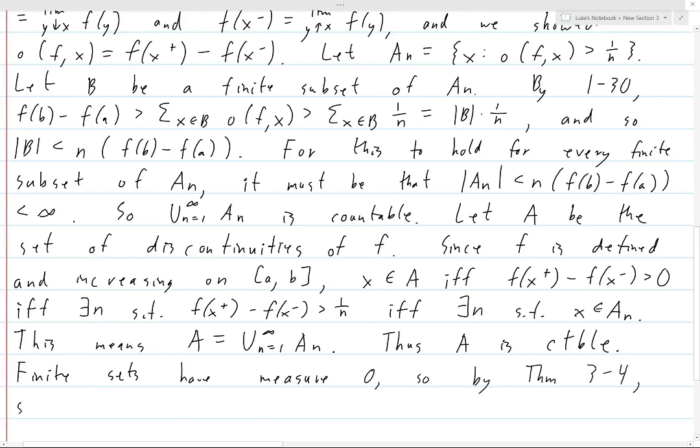So by theorem 3-4, so does A. Because what you can do is A is the union of the An's, and each An is finite, and so each An has measure zero. And so you've got a countable union of sets of measure zero, and the resulting set will have measure zero. That's what theorem 3-4 says.